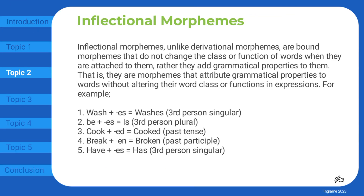Inflectional morphemes, unlike derivational morphemes, are bound morphemes that do not change the class or function of words when they are attached to them. Rather, they add grammatical properties to them. That is, they are morphemes that attribute grammatical properties to words without altering their word class or functions in expressions.